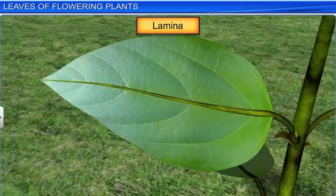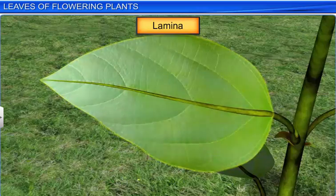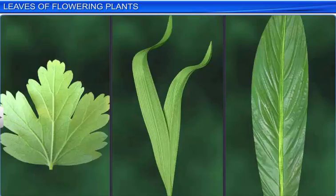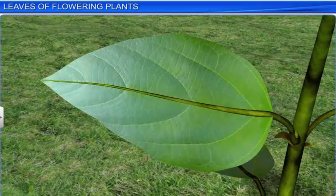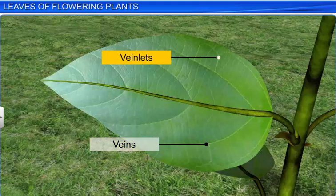The lamina is the expanded green portion of a leaf. However, its shape, apex, surface, margin, and extent of incision vary from plant to plant. The lamina also has many veins and veinlets running through it. Usually, the lamina has a prominent vein running through its center, called the midrib.